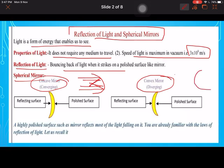In case of convex, when all the lights which are falling on the surface, they are diverged back. A highly polished surface such as a mirror reflects most of the light falling. You are already familiar with the laws of reflection of light. Let's recall it.